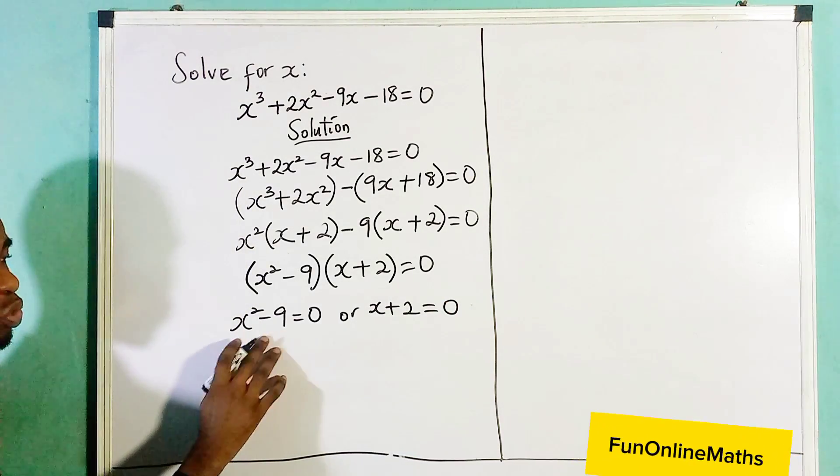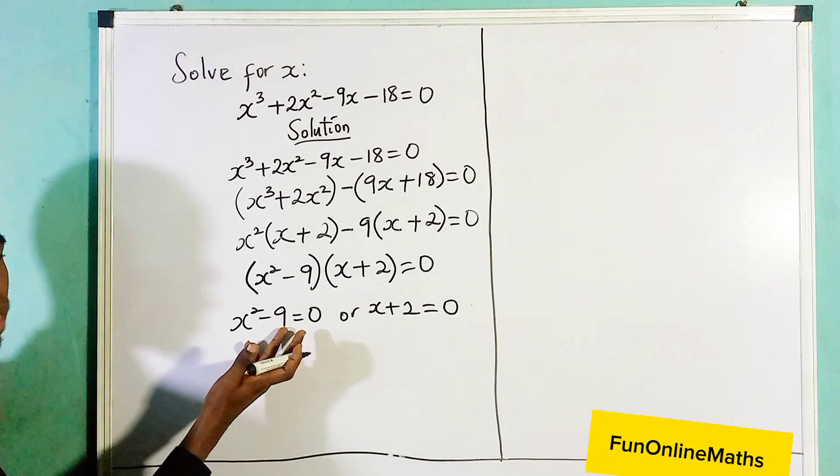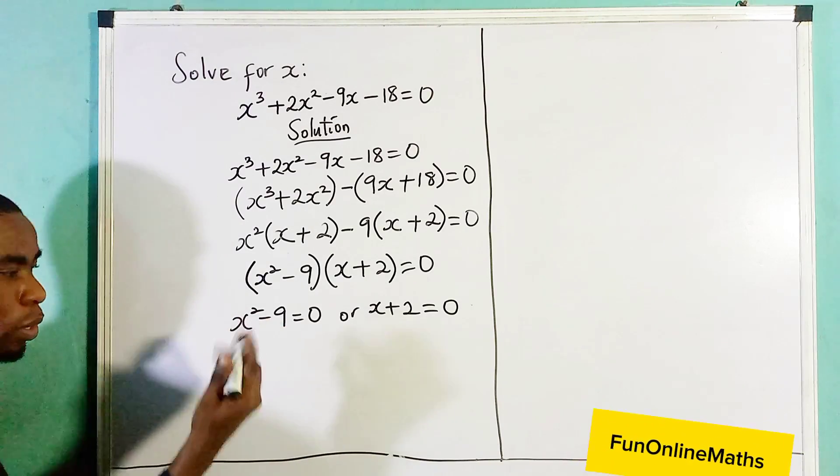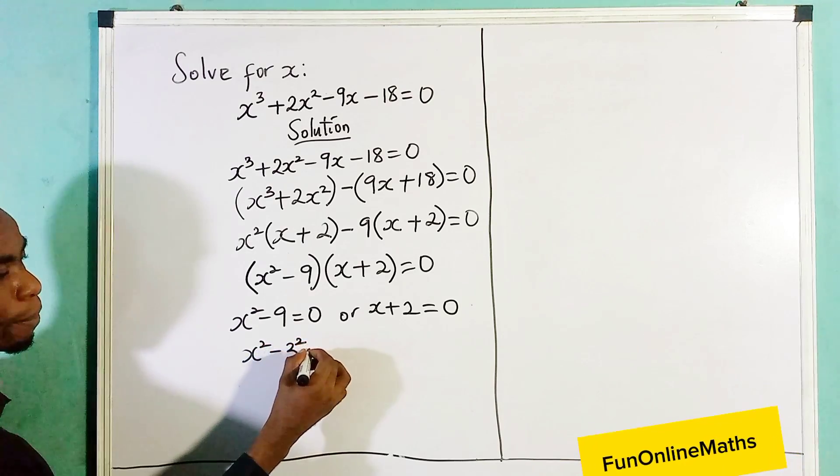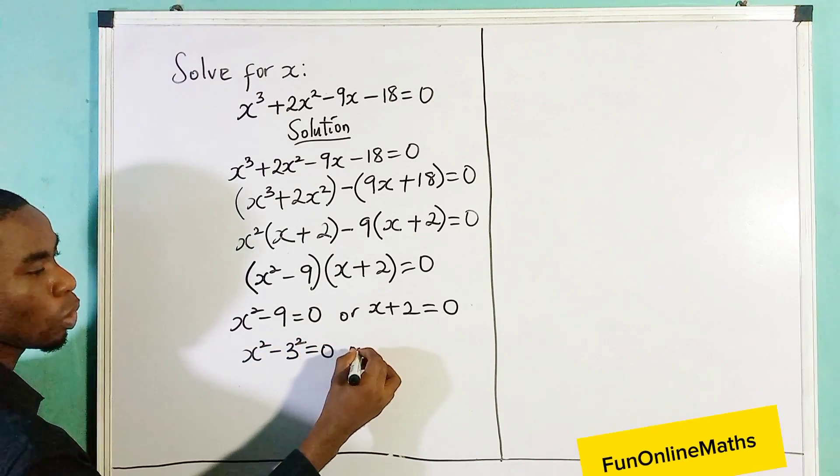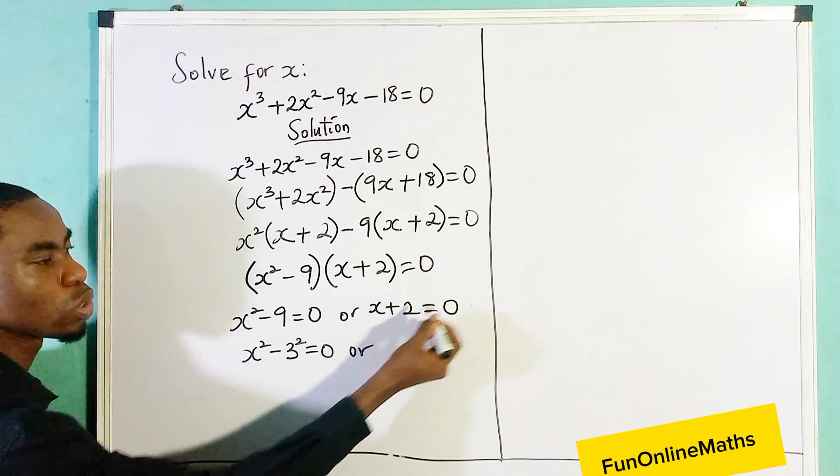Now when we have x² - 9, 9 is the same thing as 3². So we can say x² minus 3² equals to zero. Or let's finish this.